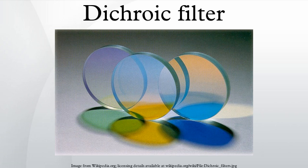Another interesting application of dichroic filters is spatial filtering. With a technique licensed from Infitec, Dolby Labs uses dichroic filters for screening 3D movies. The left lens of the Dolby 3D glasses transmits specific narrow bands of red, green and blue frequencies, while the right lens transmits a different set of red, green and blue frequencies. The projector uses matching filters to display the images meant for the left and right eyes.